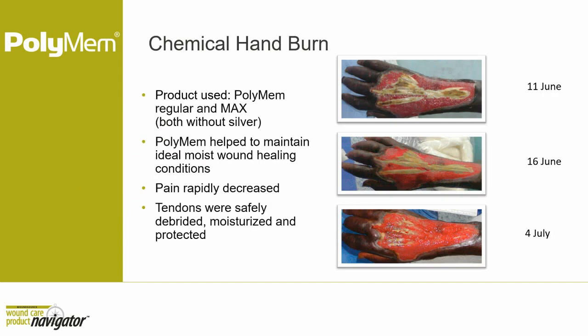Here's an example of PolyMEM Max and a regular dressing applied to an exposed tendon. You can see in just five days how beautifully the tendons look and how nicely the granulating tissue has developed. By July 4th the wound is in very good shape and the tendons are almost completely covered.